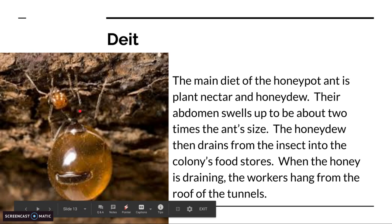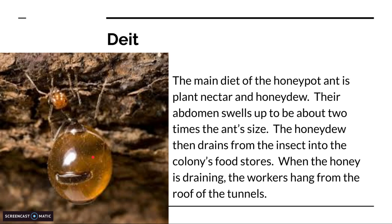It's kind of like a tap, except it's a giant bloated ant dripping honey from its abdomen into the colony's food stores, which is then carried off to the larvae, the queen, and all the workers.